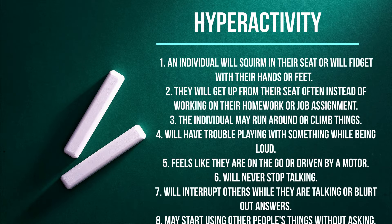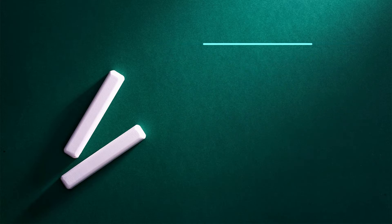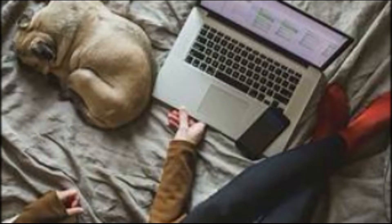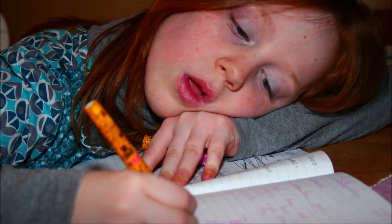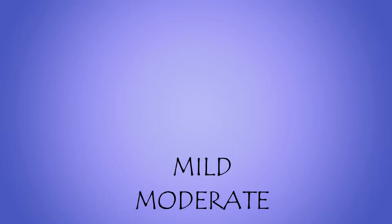Number eight, will interrupt in the conversations of others or will start using other people's things without asking. They might take over what the other person was doing. These symptoms will also present in school and at home as well as at work. These symptoms interfere with social, emotional, academic, or occupational settings, and the symptoms are not the result of schizophrenia or another psychotic disorder. It should be specified if the ADHD is mild, moderate, or severe.